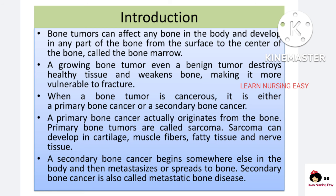Bone tumors can arise anywhere in the bones, that is at the surface or in the center of the bone where there is bone marrow. When the bone tumor keeps on growing, they can destroy the healthy tissue and weaken the bone, and thereby the patient can develop fractures. Bone tumors can be primary or secondary. Primary means when the cancer originates from the bone and its surrounding structures like cartilage, muscle fibers, soft tissue, and nerve tissue — we call these primary bone cancers, also called sarcomas.